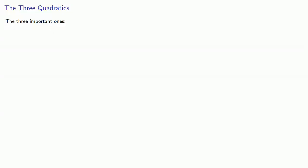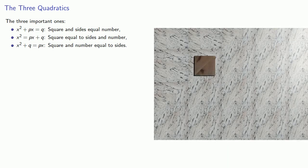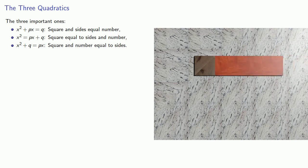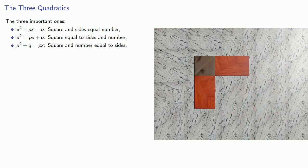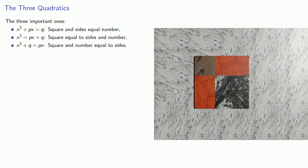Remember that in Al-Khwarizmi, there are three types of important quadratics: x² + px = q (square and sides equal number), x² = px + q (square equal to sides and number), and x² + q = px (square and number equal to sides). We've already seen how Al-Khwarizmi solved square and sides equal number. Now let's take a look at the other two quadratics.